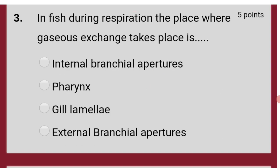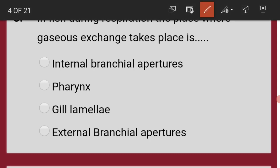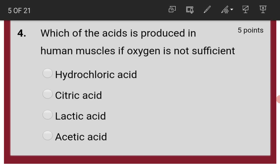In fish, during respiration, the place where gaseous exchange takes place is gill lamellae. Which of the following acids is produced in human muscles if oxygen is not sufficient? Lactic acid.